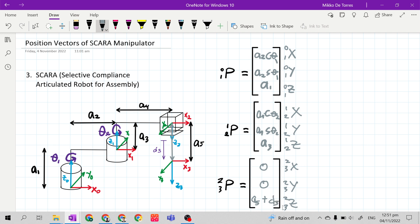So this is the complete position vector for a 3 degrees of freedom scara special manipulator. This is where we are.